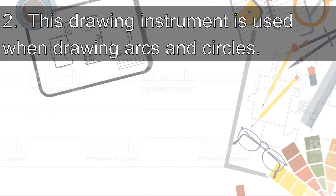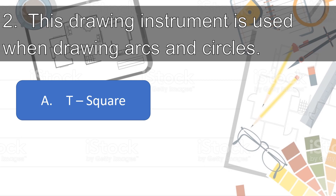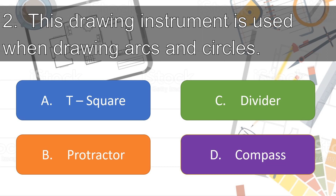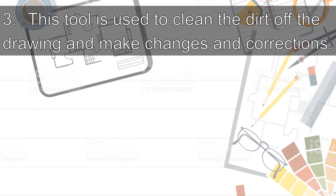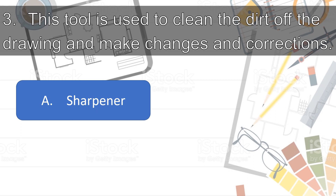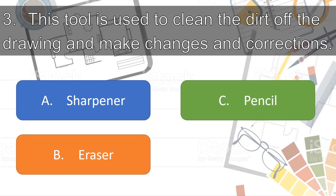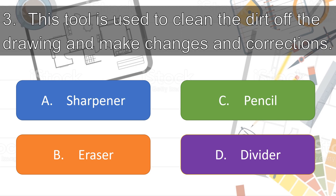Number 2: This drawing instrument is used when drawing arcs and circles. Letter A — T-square, Letter B — Protractor, Letter C — Divider, or Letter D — Compax. Very good! It's Letter D, Compax. Number 3: This tool is used to clean the dirt off the drawing and make changes and corrections. Letter A — Sharpener, Letter B — Eraser, Letter C — Pencil, or Letter D — Divider. Good job! It's Letter B, Eraser.